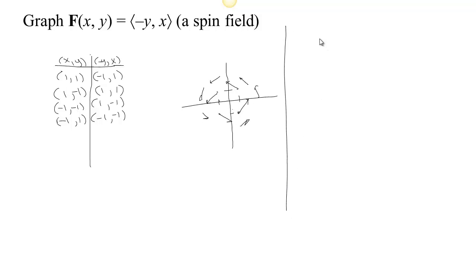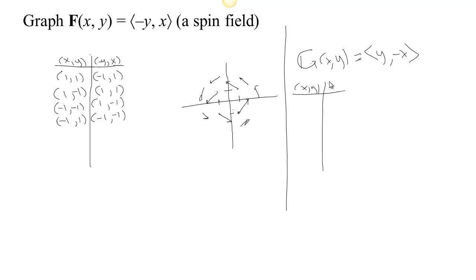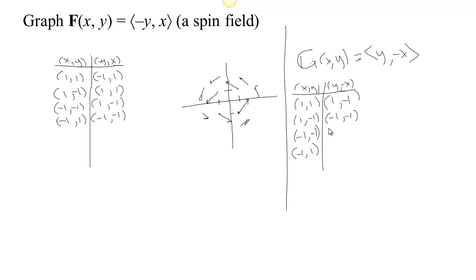Watch what happens with this slightly different one — let's call it G, another vector field. G(x, y) = (y, -x). Checking the same points: at (1, 1), y is 1 and -x is -1, so we get (1, -1). At (1, -1), y is -1 and -x is -1, giving (-1, -1). At (-1, -1), y is -1 and -x is 1, giving (-1, 1). At (-1, 1), y is 1 and -x is 1, giving (1, 1).